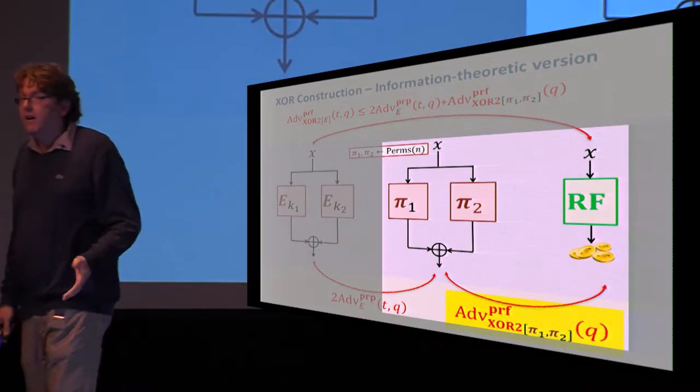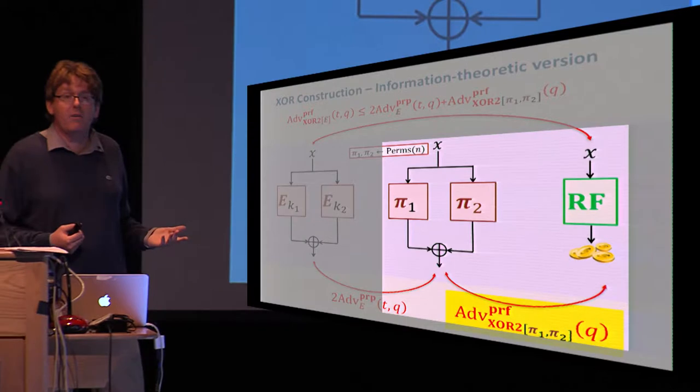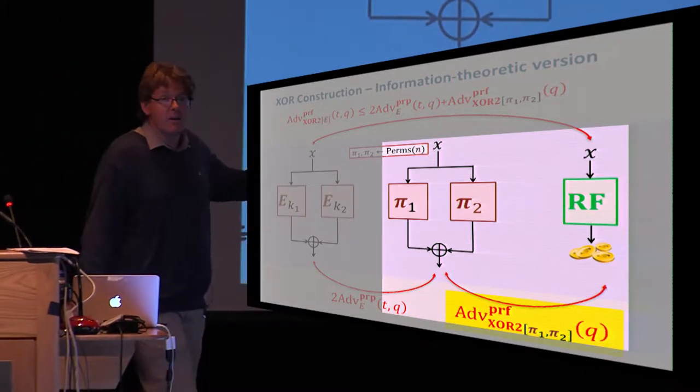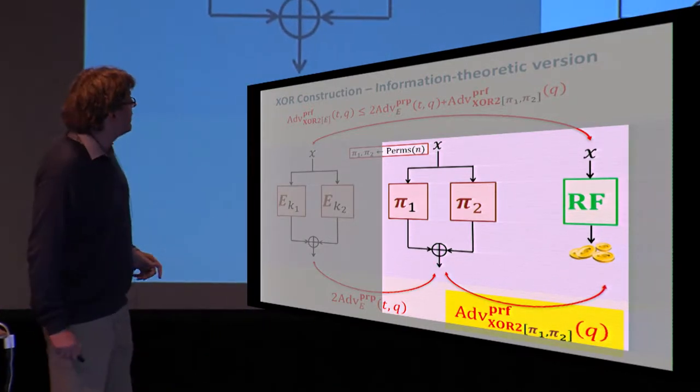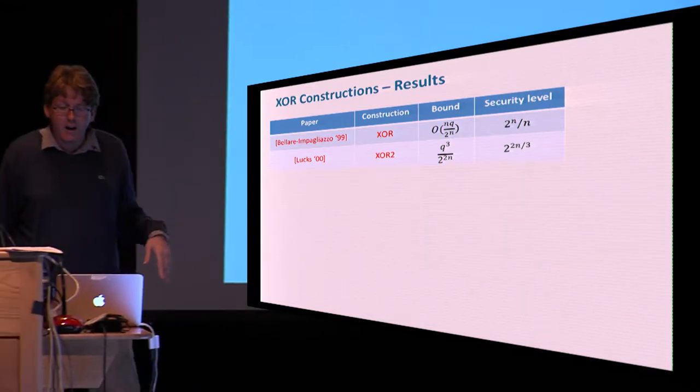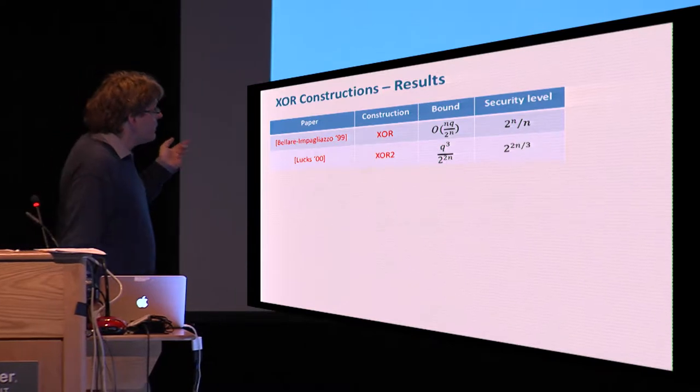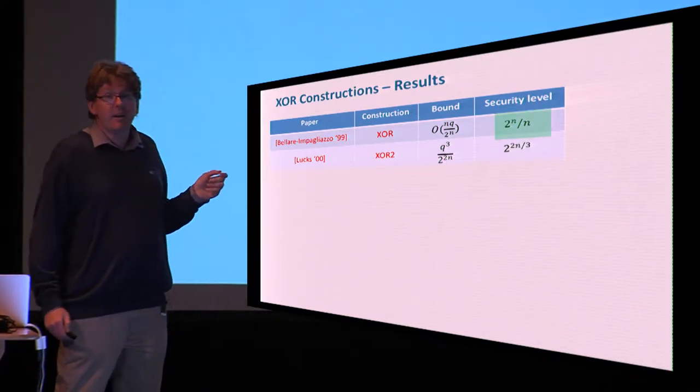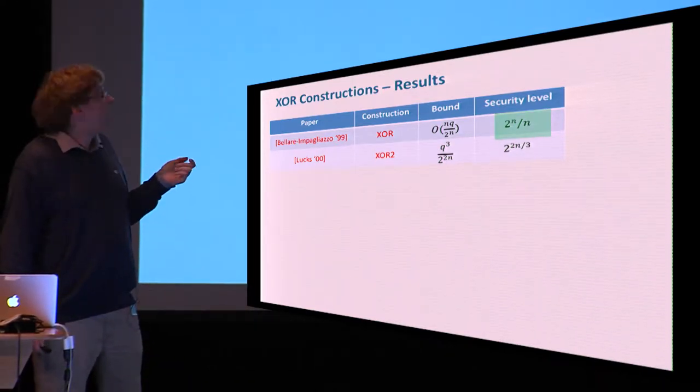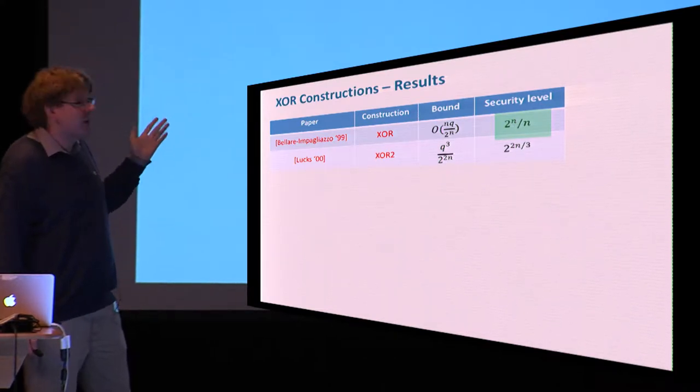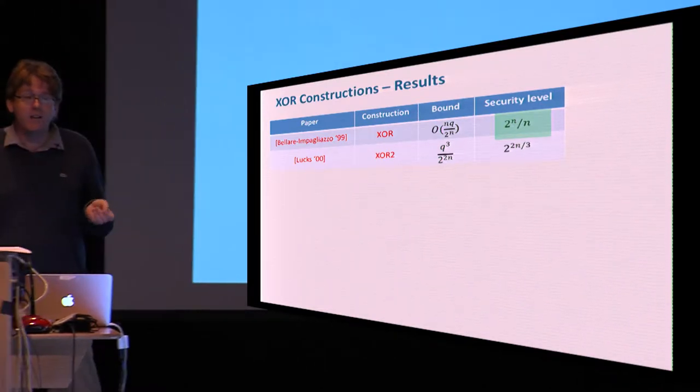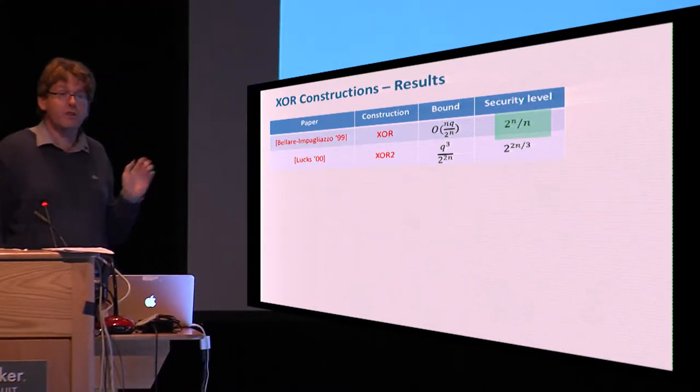Giving such bounds typically is a pure information theoretic problem. We don't really know how to exploit computational bounds on the power of the distinguisher. We typically only exploit the number of queries it makes. There has been work and technically very involved work on analyzing this quantity and analyzing these constructions. The first such result was by Bellare and Impagliazzo, who published in 1999 an unpublished manuscript that gave a bound that essentially implies security up to almost 2^N queries.